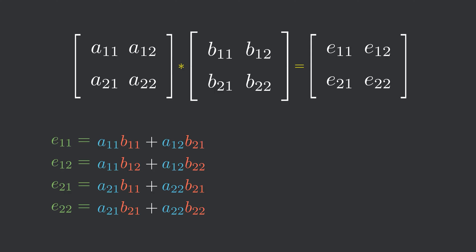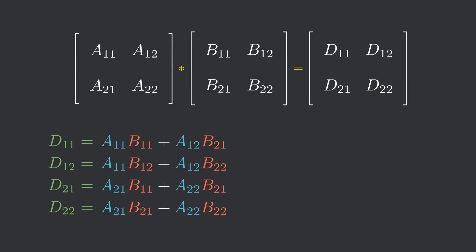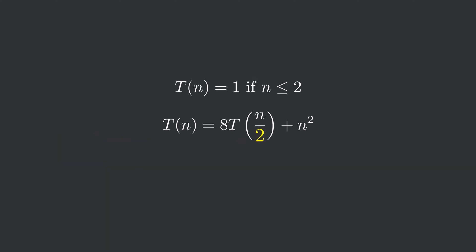Now, let's analyze the recurrence relation for this algorithm. Here, the base case is when the dimension of matrix is at most 2. Here, 8 represents the number of multiplication at each level of recursion. In other words, problem is being divided into 8 further sub-problems. And 2 represents the fact that each sub-problem is being reduced to half the dimension as previous one.